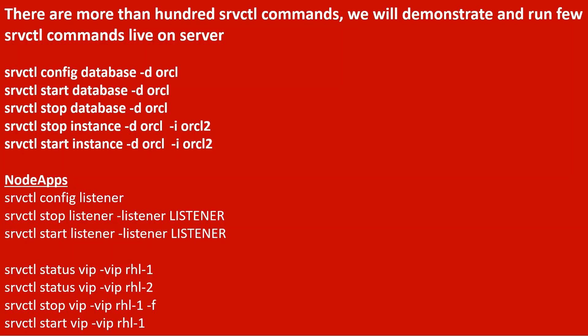There are some node apps. I am going to show you how to start and stop the node apps. You can use SRVCTL config listener to see the configuration of the listener. If you have to stop the listener, then use SRVCTL stop listener -listener and the listener name. SRVCTL start listener -listener followed by the listener name will start the listener. I am also going to show you some more node apps like VIP start and stop. Let's move on to the server right away.